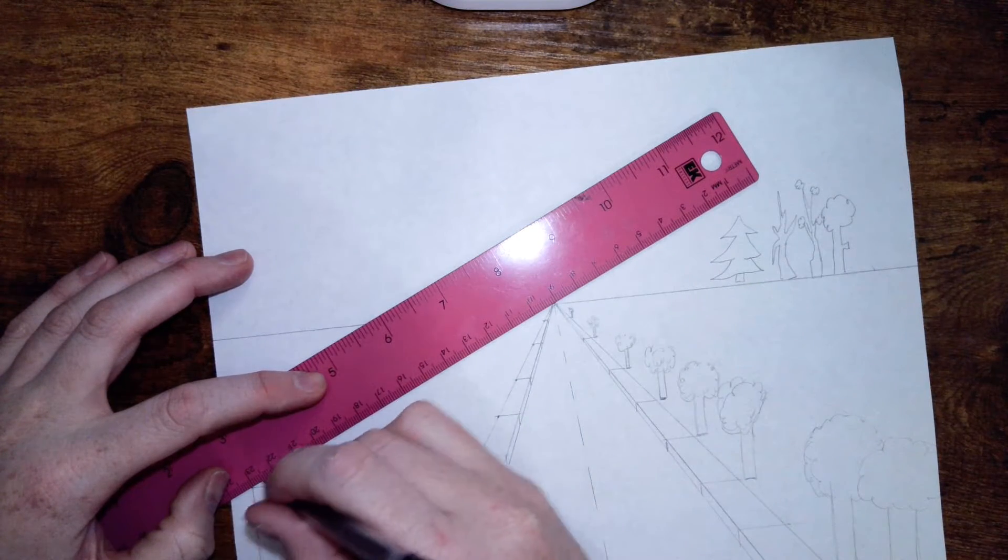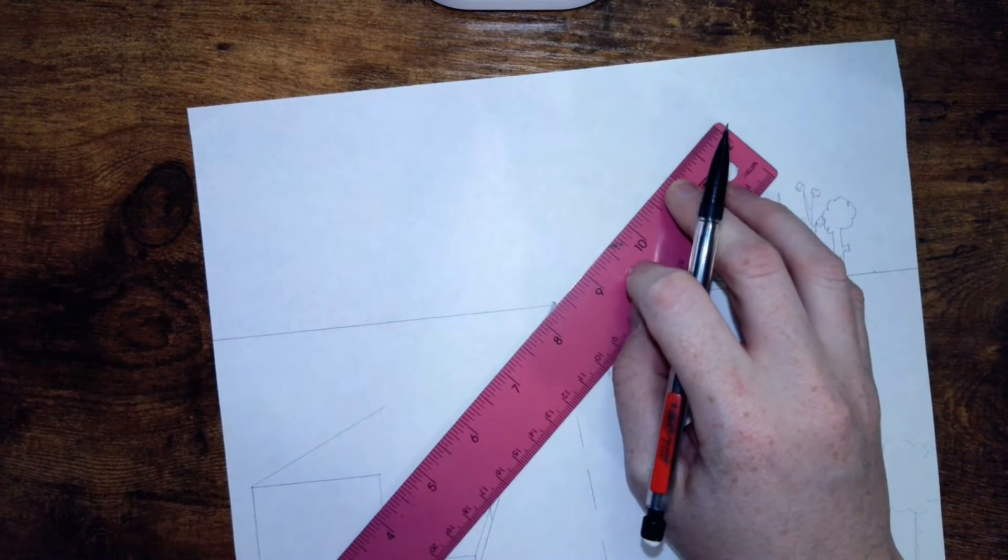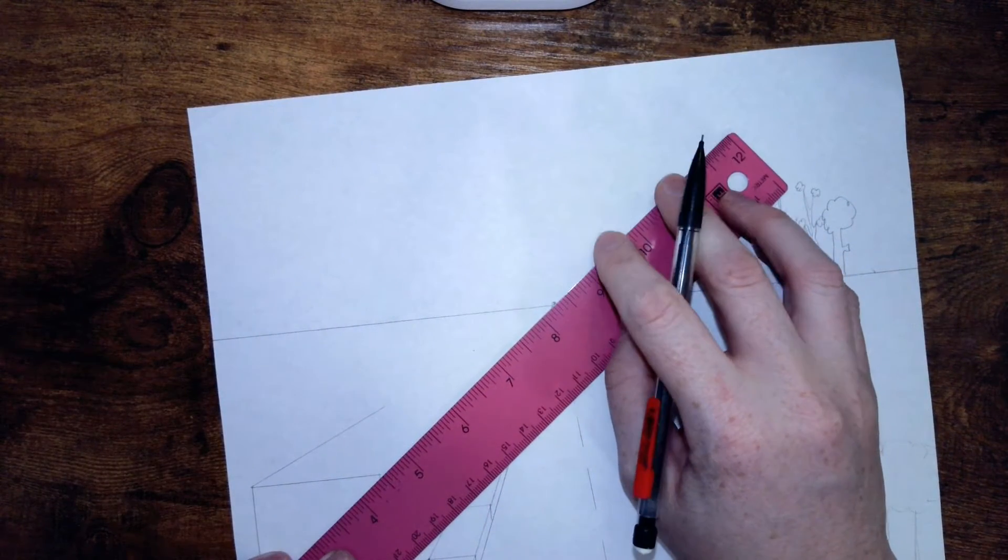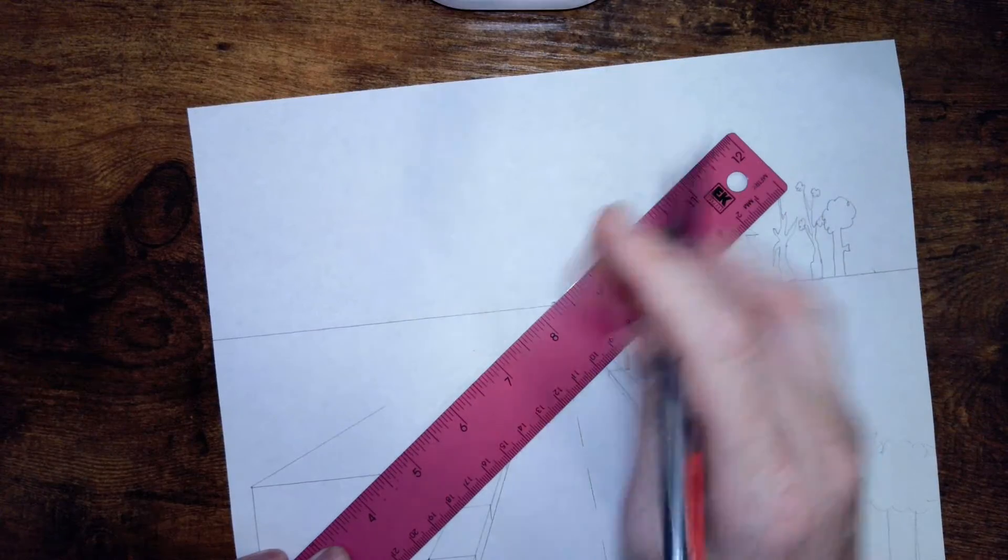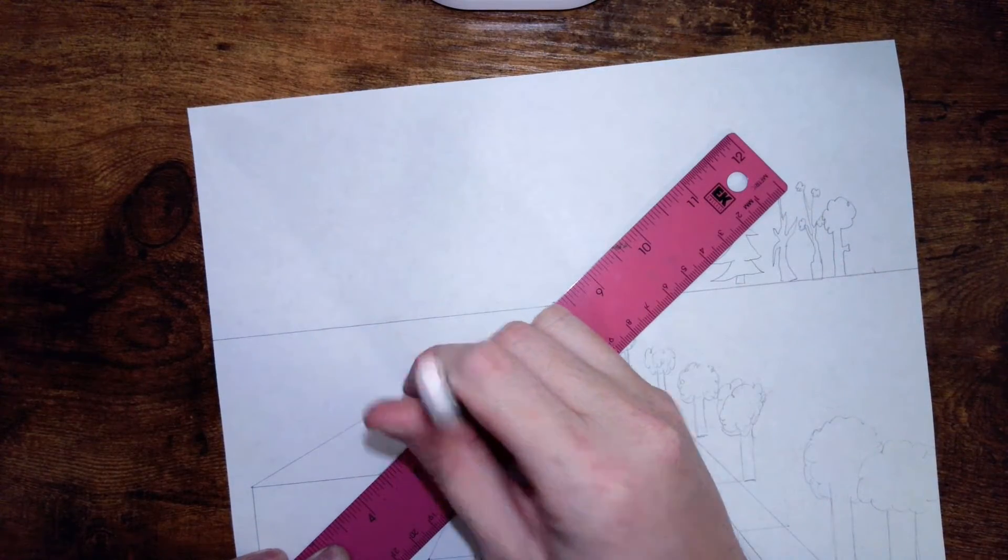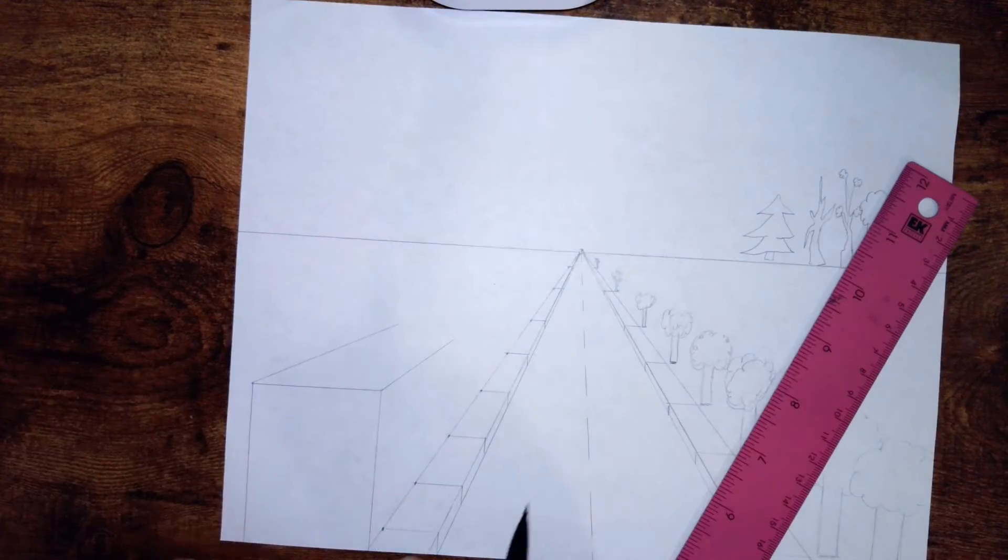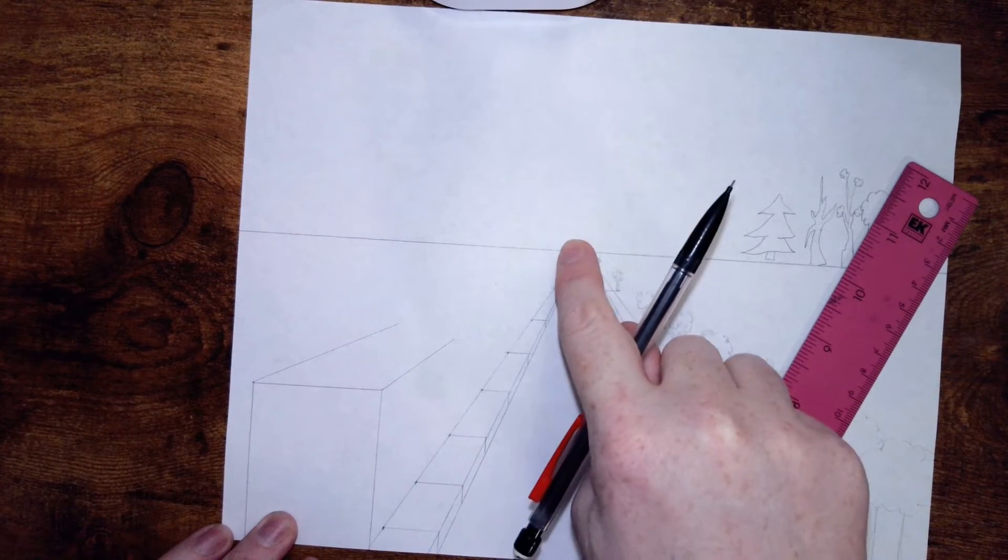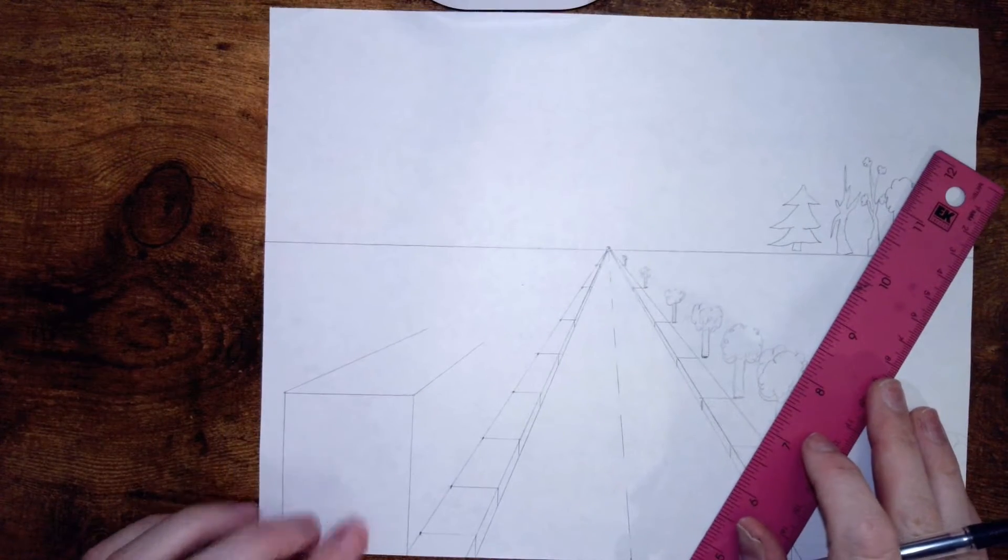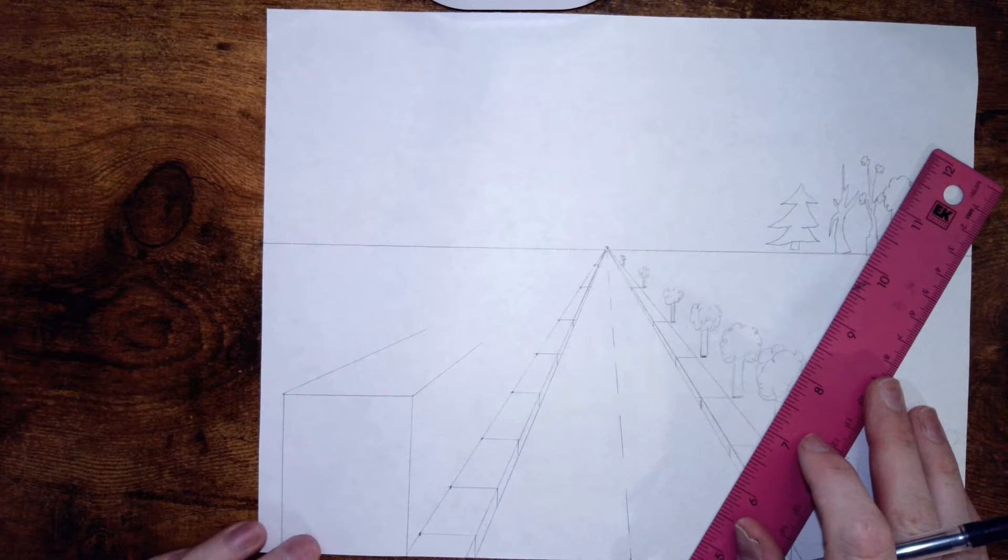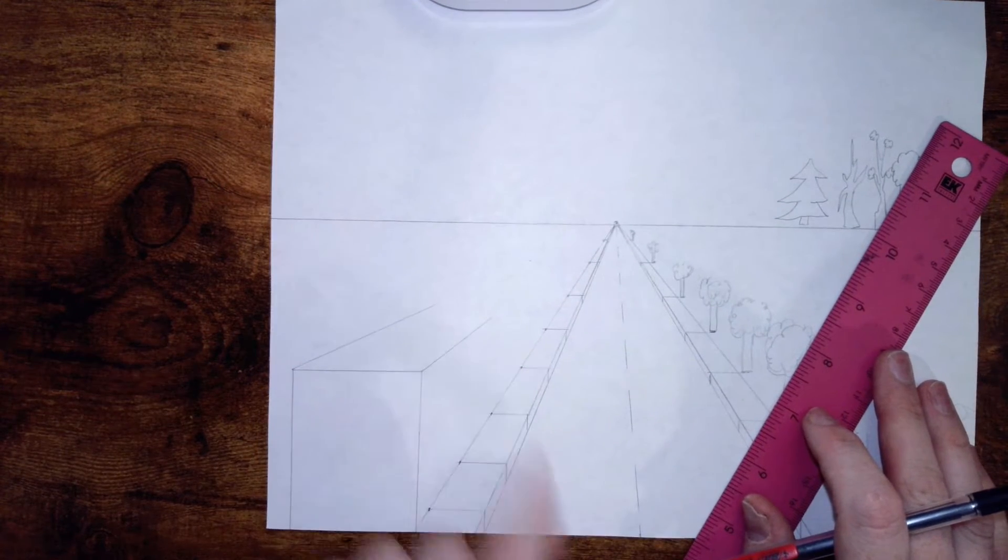These are my vanishing lines, so each corner of the building should line up. I already have this lined up through the sidewalk, so that one's perfectly fine. Now I need to decide where I want my building to end.